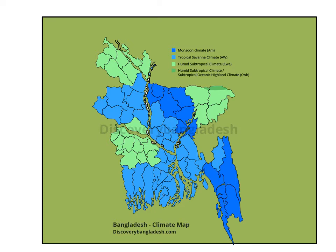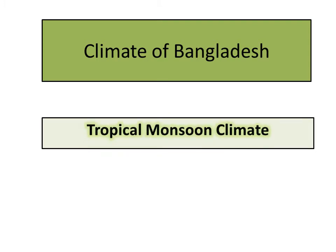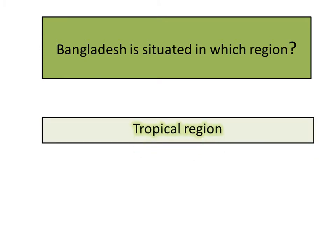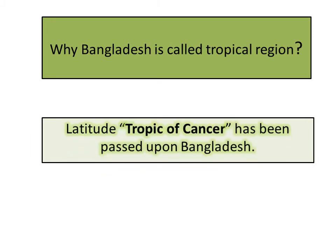Mainly, Bangladesh has one type of climate. Do you know what it is? The climate of Bangladesh is called tropical monsoon climate. Bangladesh is situated in a tropical region. Why is Bangladesh called a tropical region? Because a latitude named the Tropic of Cancer passes through Bangladesh — that is why Bangladesh is called a tropical region.